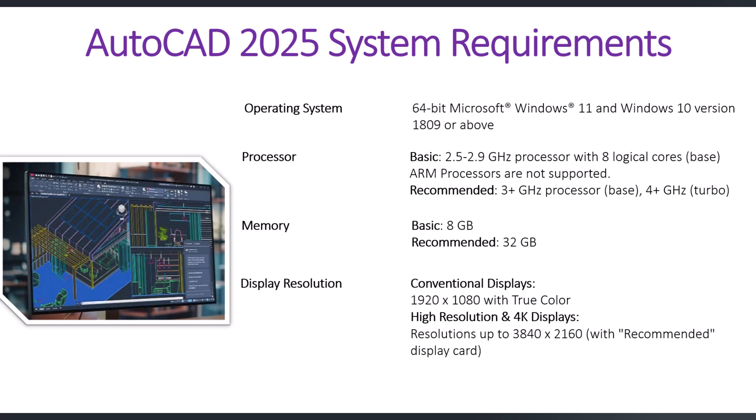When you render your model, a higher processor will help. For memory, the basic minimum for running AutoCAD should be 8GB, but I believe it should not be less than 16GB. The recommended amount is 32GB. For display resolution, you can use a conventional display at 1920x1080, which is the basic standard most people have. If you want higher resolution, you can use 4K as well.